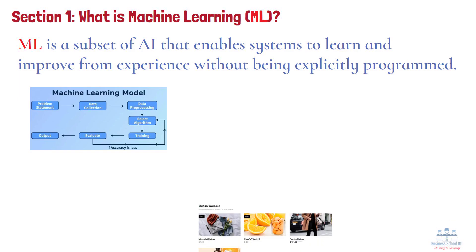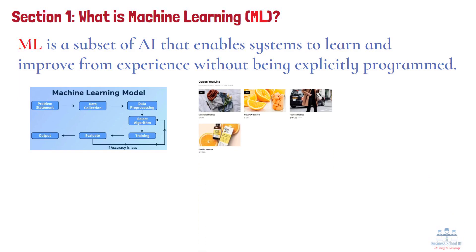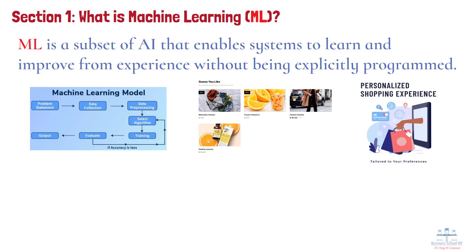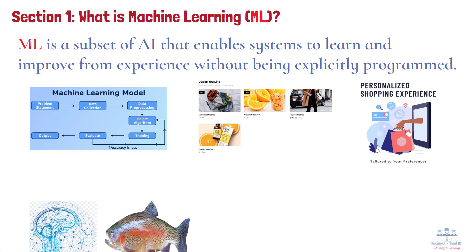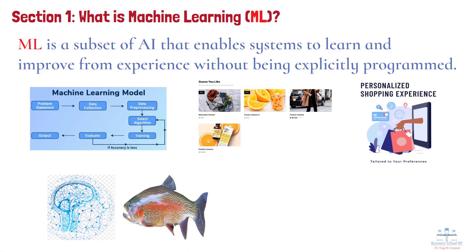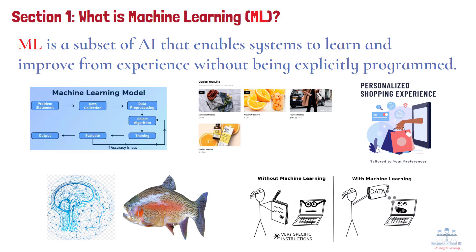For example, think about your favorite online shopping platform. When it suggests products you might like, it's using ML to analyze your browsing history, past purchases, and preferences. The result? A personalized shopping experience that feels tailored just for you. ML is like teaching a computer to fish — instead of giving it specific instructions, you're providing examples, lots of them, so it can figure out the patterns and learn to fish on its own.